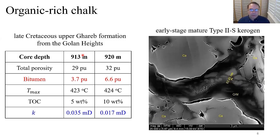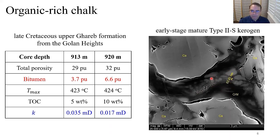The core samples used in this work are from the late Cretaceous upper Garib formation in the Golan Heights. The matrix consists of microcrystalline calcites or micrite intermixed with high concentrations of organic matter, as shown in the SEM image. The upper Garib formation consists of organic-rich bituminous foraminiferal chalks — an early-stage Type 2S kerogen due to its high sulfur content.